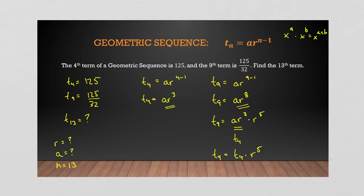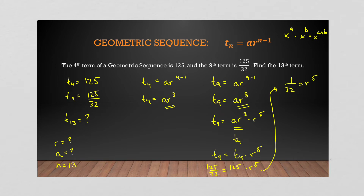We have a value for t₄ = 125 and t₉ = 125/32, so we set up: 125/32 = 125 · r⁵. Dividing both sides by 125 gives 1/32 = r⁵. Taking the fifth root of both sides, we get r = 1/2. We've found our common ratio.